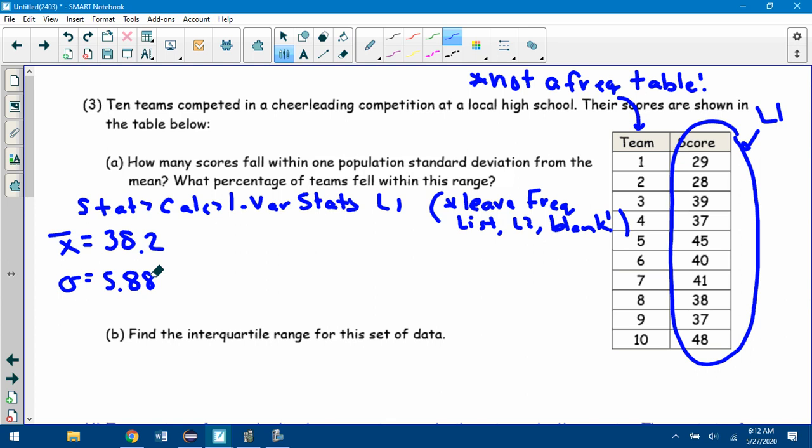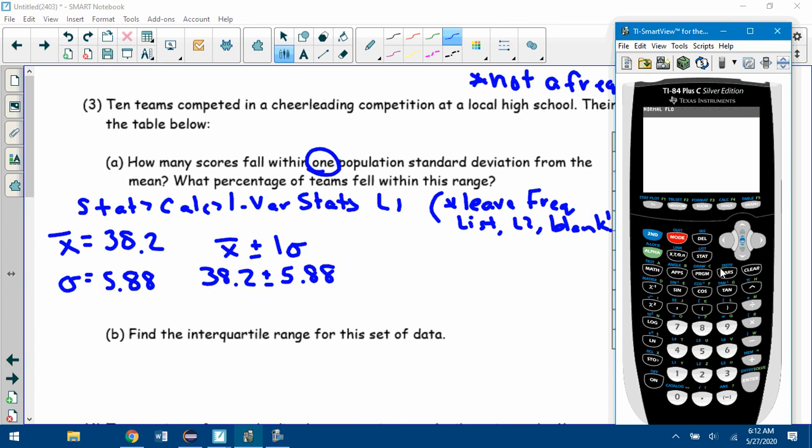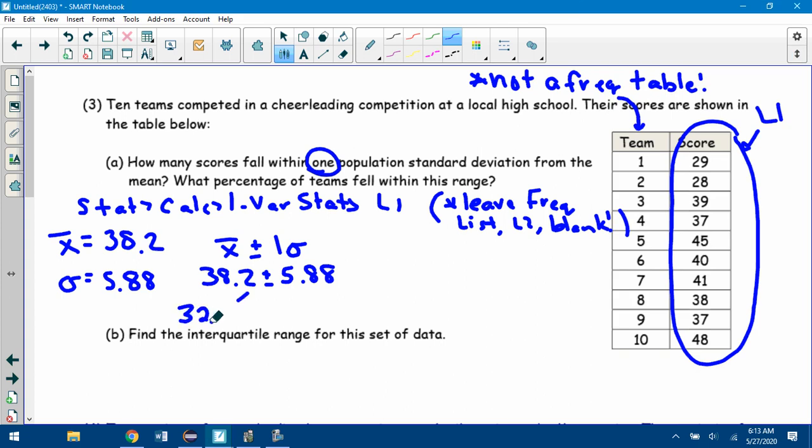So mean is 38.2, standard deviation is 5.88. We want to know how many scores fell within one population standard deviation. So take the mean plus or minus one standard deviation. So if I do 38.2 plus or minus 5.88, this is not the margin of error. This is just a different question talking about within one standard deviation of the mean. So 38.2 plus 5.88, the upper level is 44.08, and 38.2 minus 5.88, the lower level is 32.32. So 32.32 to 44.08. And it wants to know how many scores are within here. So 29 doesn't count. 28 doesn't count. 39 is good. 37 is good. 45 is too big. 40 is good. 41 is good. 38 is good. 37 is good. But 48 is too big.